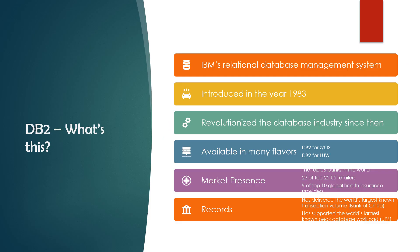In this slide we'll discuss what DB2 is. DB2 is a relational database. It is IBM's second database product and was introduced in 1983. Regarding availability, DB2 comes in two flavors: DB2 for z/OS and DB2 for LUW. In terms of market value, DB2 is used in the banking sector, Indian airlines, top retailers, global health and insurance, and more.